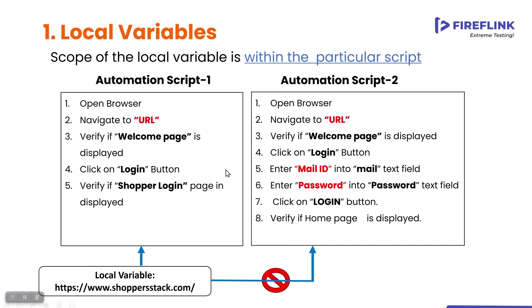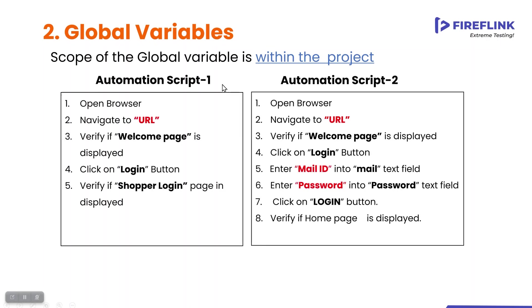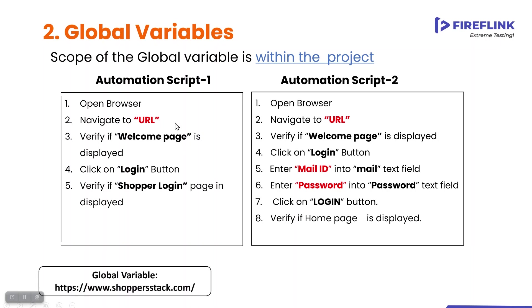Now let me move to the global variable. Talking about global variable — the scope is within the project. When you create a variable as a global variable, you can access it inside the project across hundreds or thousands of test cases. I am creating a URL variable in script number one. Now I want to access the same URL variable in my second script — is it possible? Yes, it is possible, because I have created it as a global variable. When you create a variable as a global variable, you can access it in all the scripts under the project.